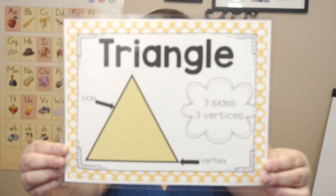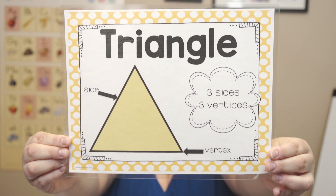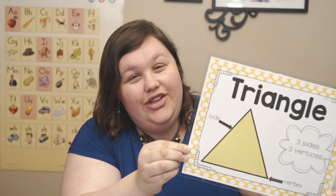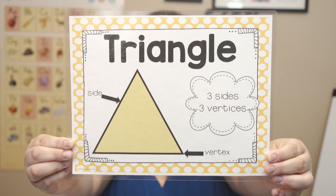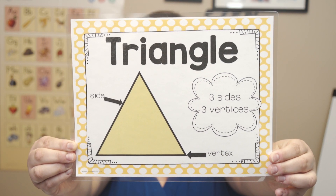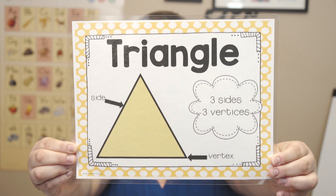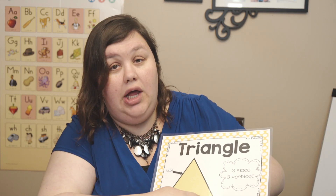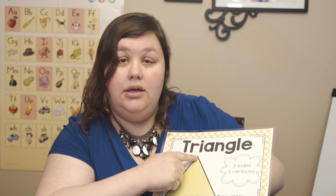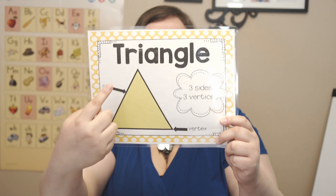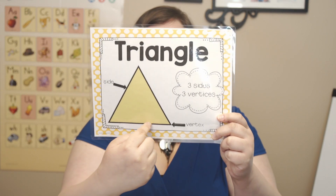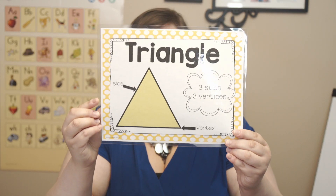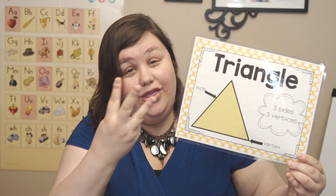What's this shape? Did you say triangle? You got it. How do we know it's a triangle? Do you see any sides on this one? There weren't any sides on our circle, but what does our triangle have? Let's count them — one line, two line, three lines. How many sides are there? It has three sides.